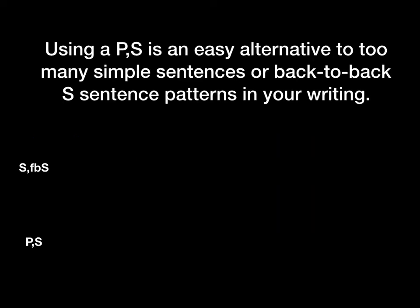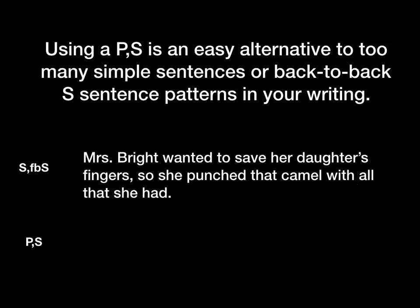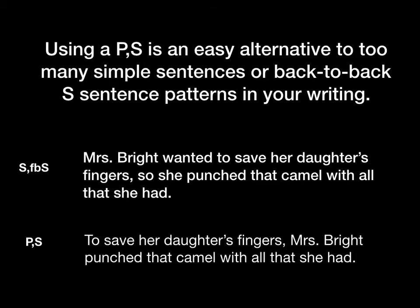Like our other sentence patterns, P comma S is useful for adding variety. Check out this S comma FANBOYS S, which is a frequently overused pattern: 'Miss Bright wanted to save her daughter's fingers, so she punched that camel with all that she had.' There's nothing wrong with this, but if you've already written two or three S comma FANBOYS sentences recently, you want to switch it up. All you do is say: 'To save her daughter's fingers, Miss Bright punched that camel with all that she had.' All I had to do was take the last part of that sentence — already an infinitive phrase — and plop it in front of my other sentence instead.